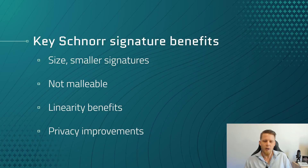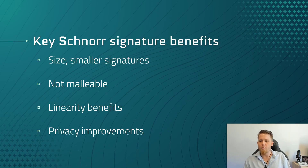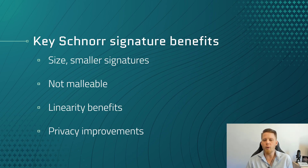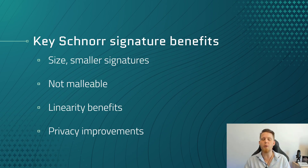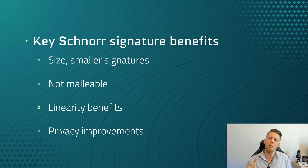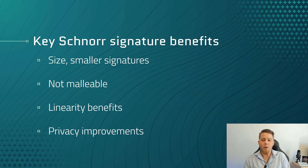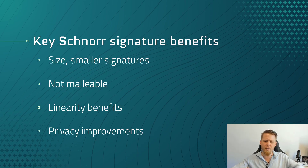Schnorr signatures are better than ECDSA for a number of reasons, especially now that the patent has expired. First of all, the size. These are a fair bit smaller, which is great for squishing in even more data into the existing block sizes. This is important because it improves the efficiency of the data stored on the blockchain rather than simply growing the raw block size.